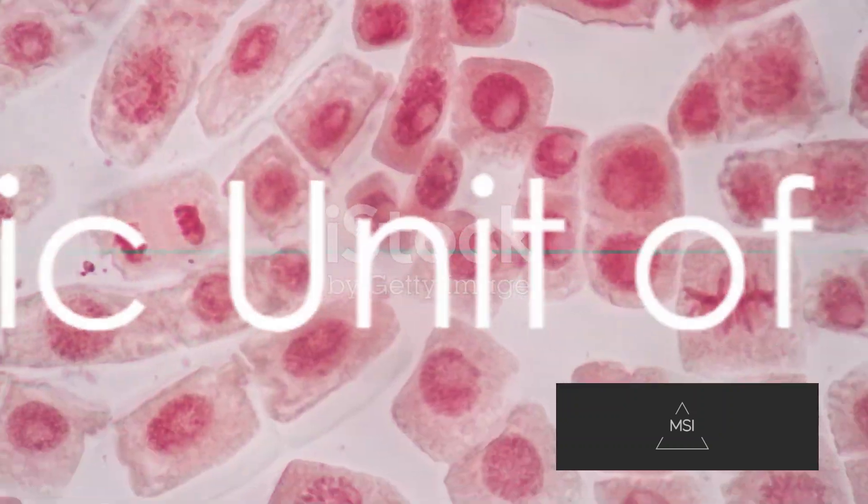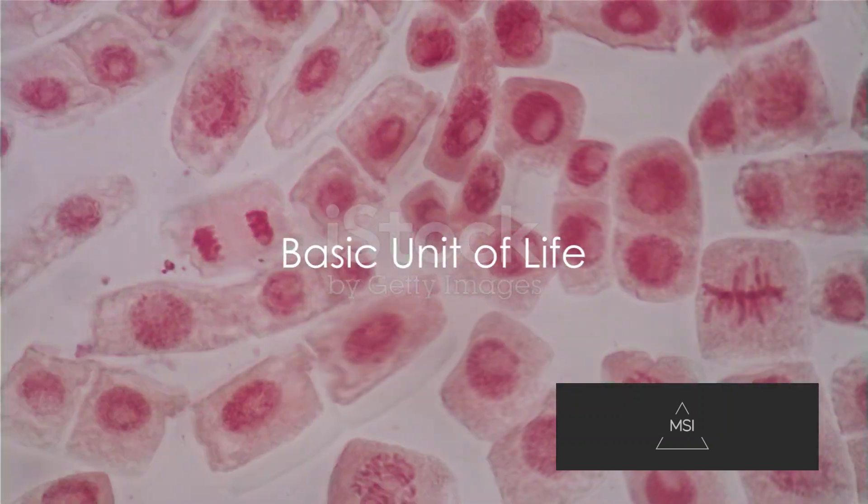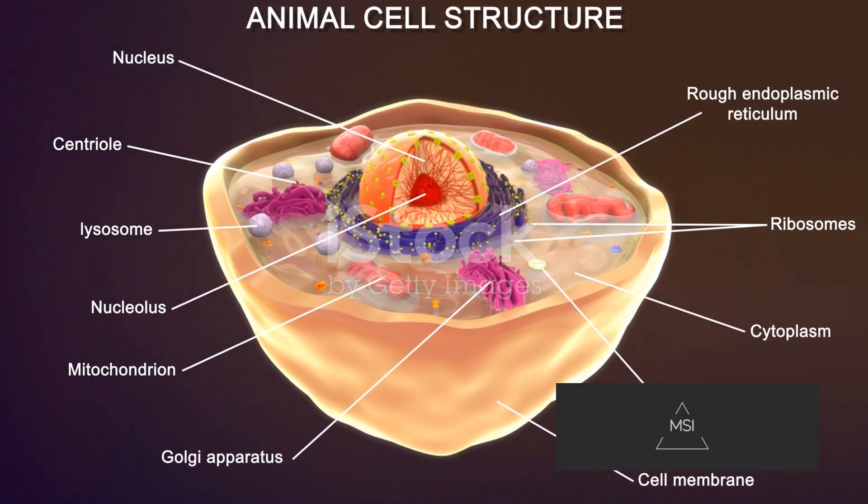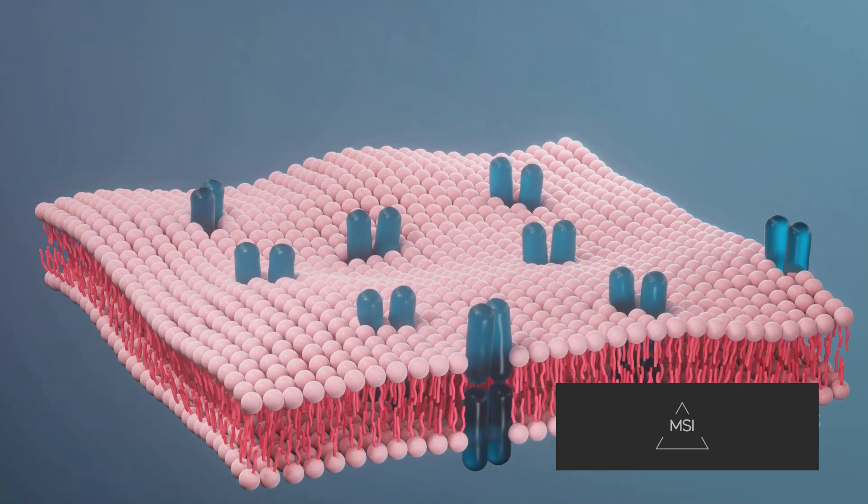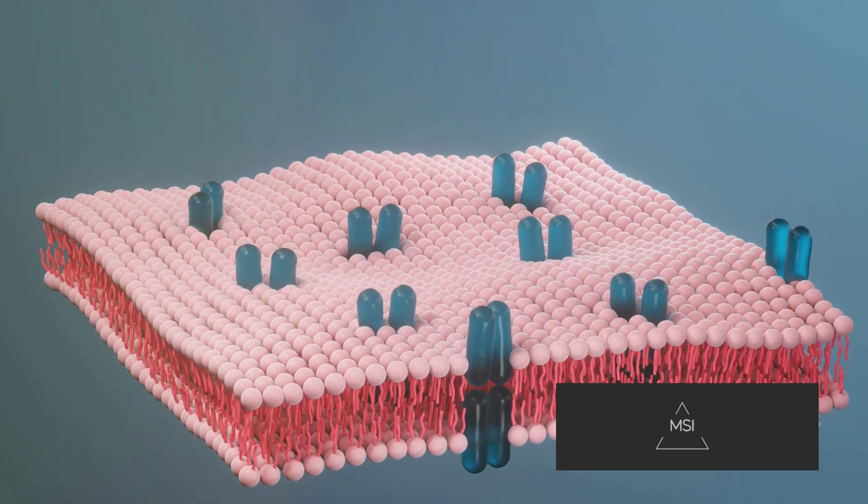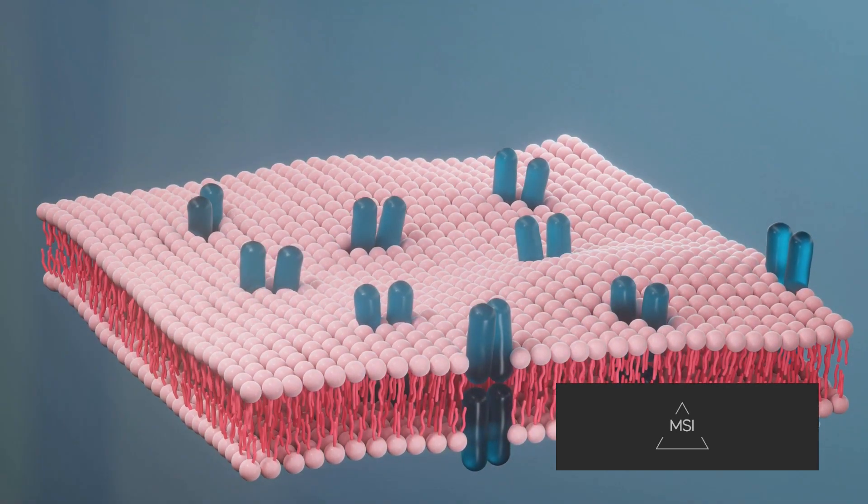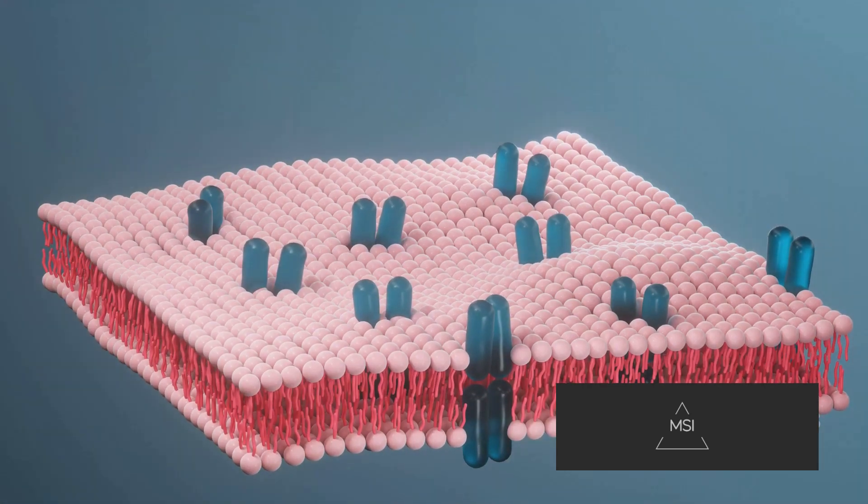We begin with the most basic unit of life, the cell. The cell is the smallest unit of life that can function independently. It encapsulates a microcosm of complexity within its membrane, a complexity that is amplified as we ascend the biological hierarchy.